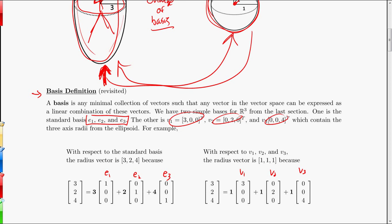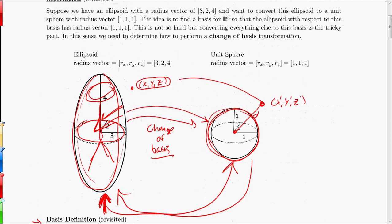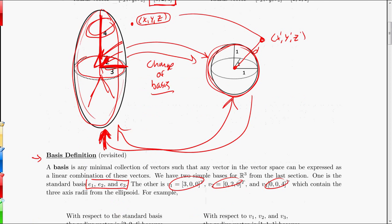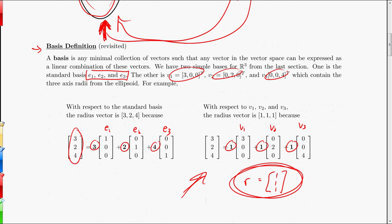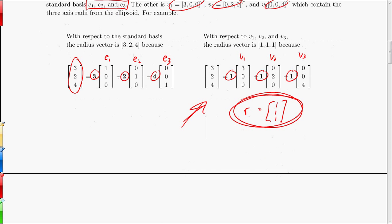What's nice about this new basis is that, going back to our example, the radius vector for the ellipsoid was 3, 2, 4 — meaning 3 in the x direction, 2 in the y direction, 4 in the z direction. With respect to the standard basis, that's 3·E1 + 2·E2 + 4·E3. But with respect to our new basis, it's 1·V1 + 1·V2 + 1·V3, so the radius vector is just 1, 1, 1. Those are the coefficients with respect to the new basis. So essentially, with respect to this new basis, my ellipsoid is now a unit sphere. Let's figure out how we do one of these change of basis transformations.